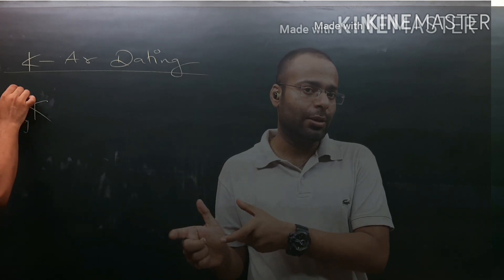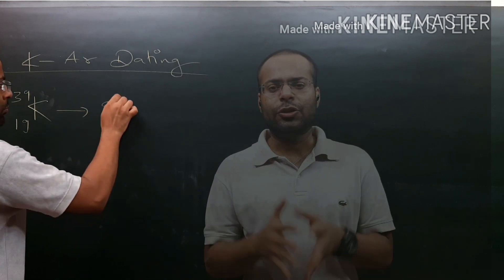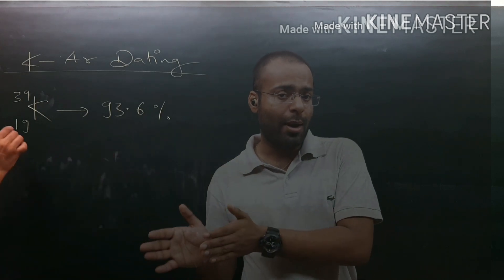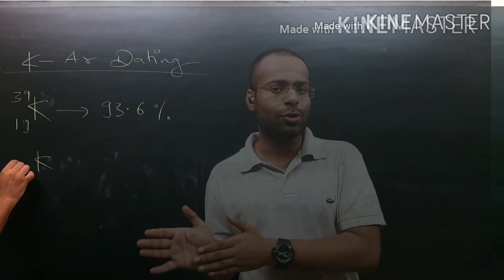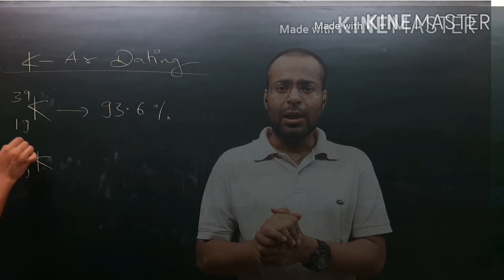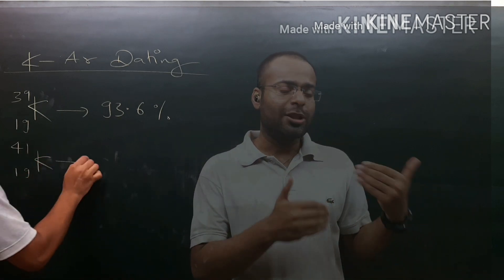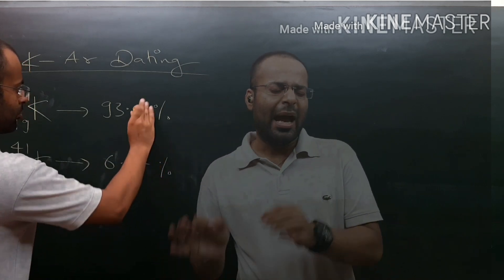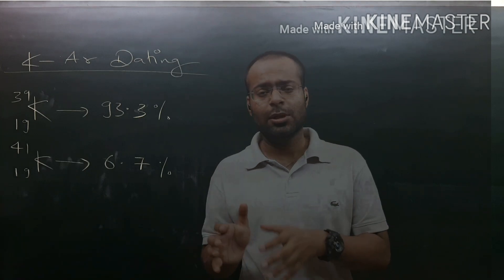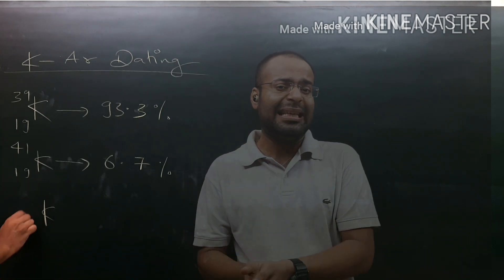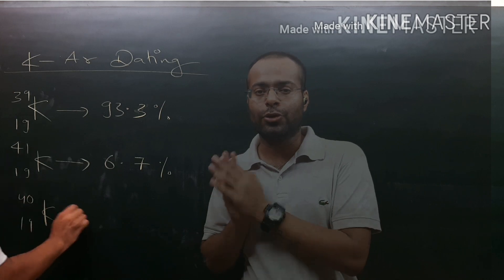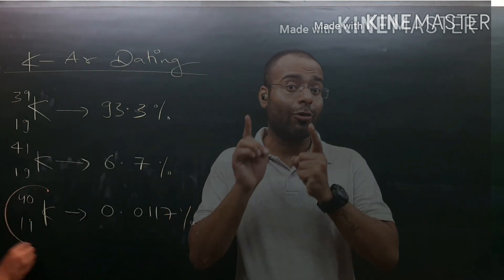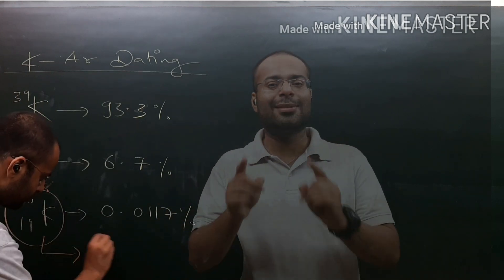Potassium has atomic number 19 and exists in three different isotopes. Potassium-39 is the most abundant at approximately 93.6%, potassium-41 is approximately 6.7%, and a very little amount, only a smidge, is potassium-40 which is just 0.0117%.